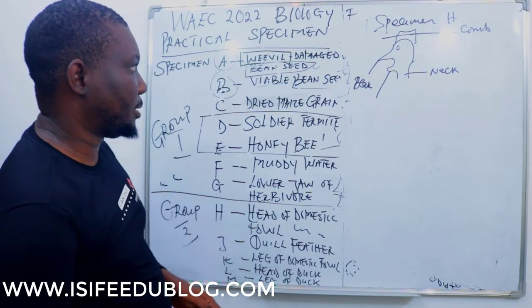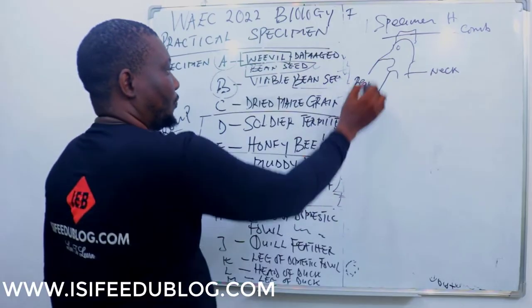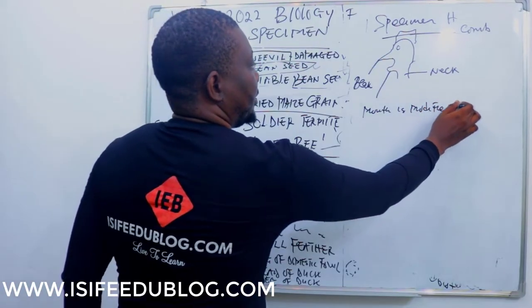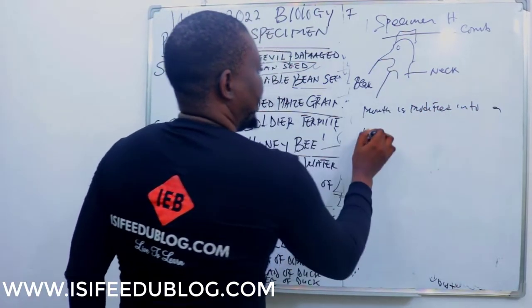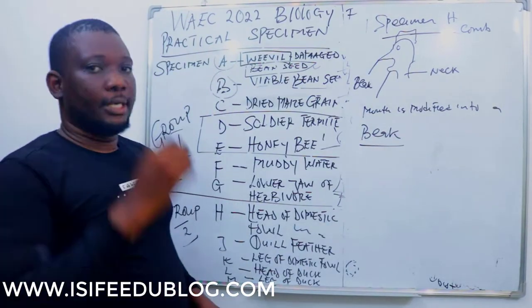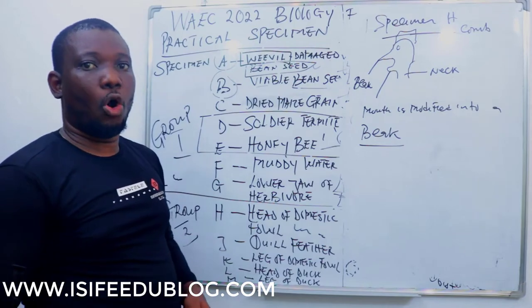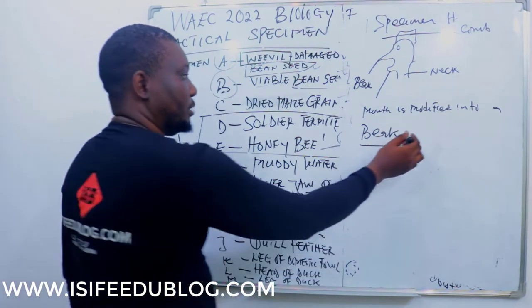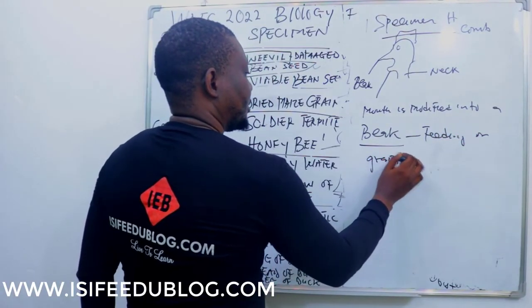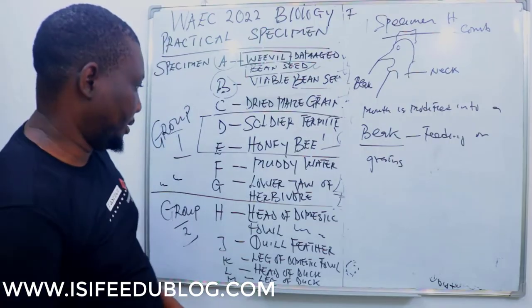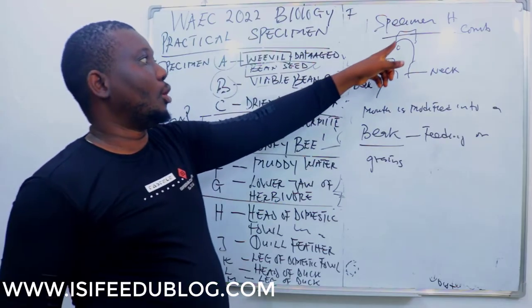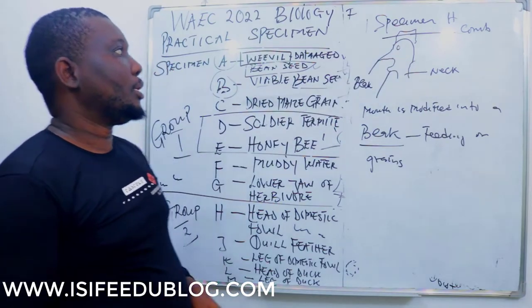Interestingly, we're going to look at the role of these parts. The mouth of a fowl is modified into a beak. The role of the beak is for feeding on grains. That is the role of the beak. The role of the eye is for seeing, or for vision.